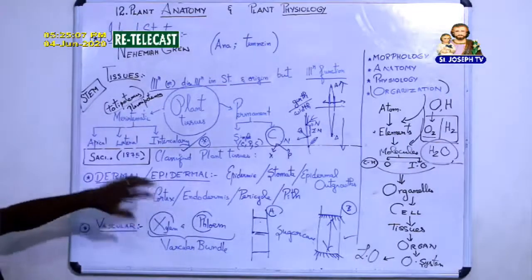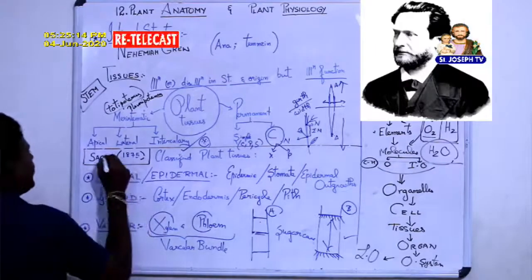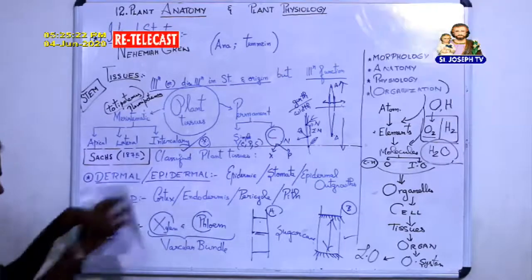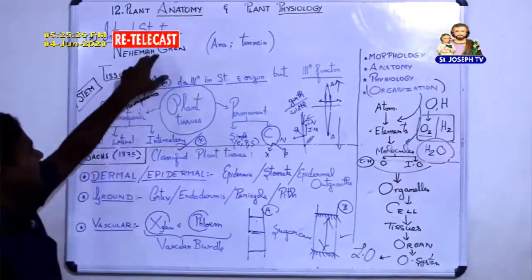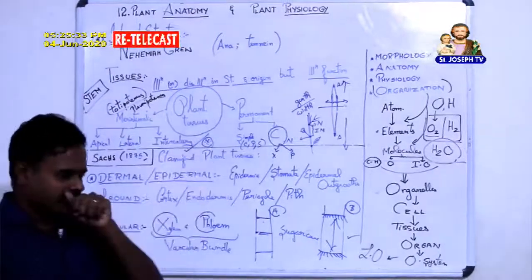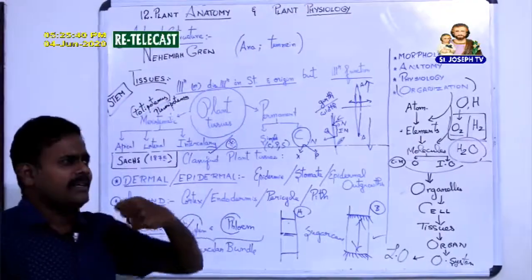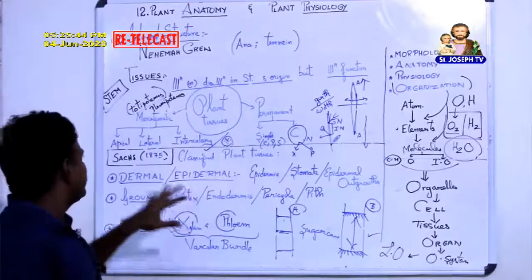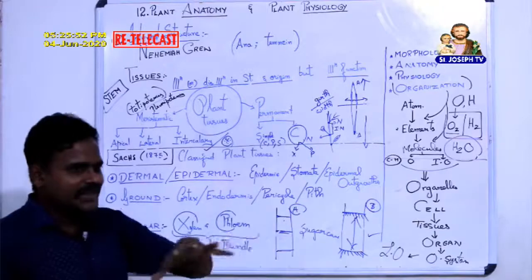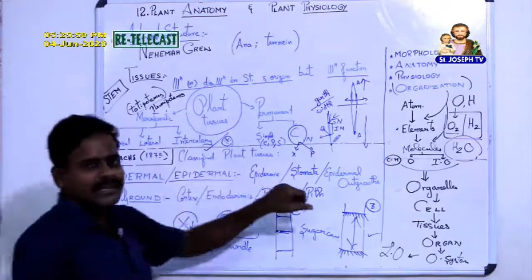Now we will go to the main part of the lesson. Scientist SACS, in 1875, classified plant tissues into three types: dermal or epidermal tissue system, ground tissues, and vascular tissues. Regarding Nehemia Gru — there are many scientists who have worked on a subject, some failing, some succeeding, and one gets recognized. Nehemia Gru was the first to publish the internal structure and is called the father of plant anatomy.